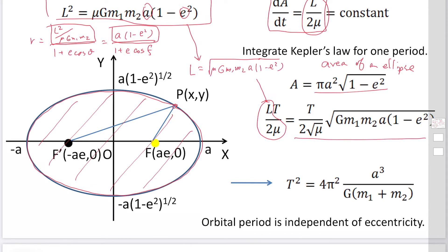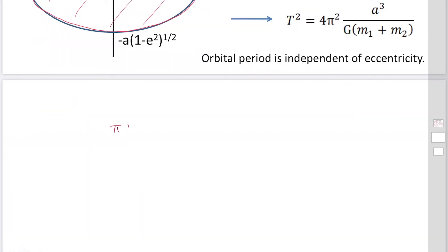So we have this relation: πa²√(1 - e²) equals T over 2√μ times √(Gm₁m₂a(1 - e²)).